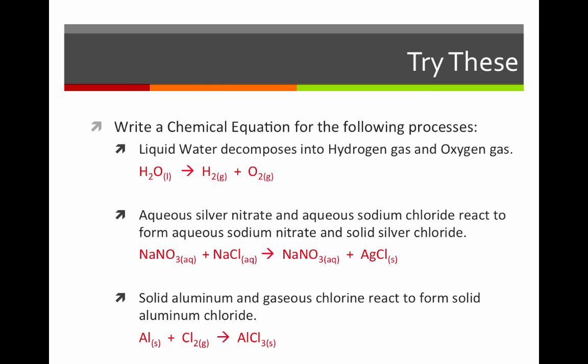Welcome back. Here's what you should have gotten. Notice in the very last one, you had to think about the fact that aluminum has a positive 3 charge and chlorine has a negative 1 charge when it combines to form an ionic compound, so you get AlCl3.